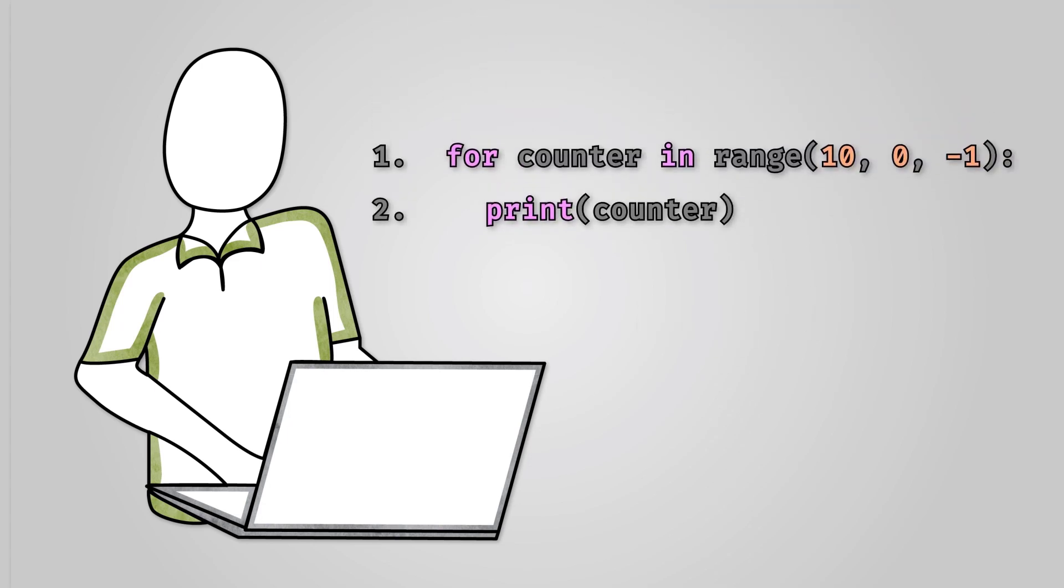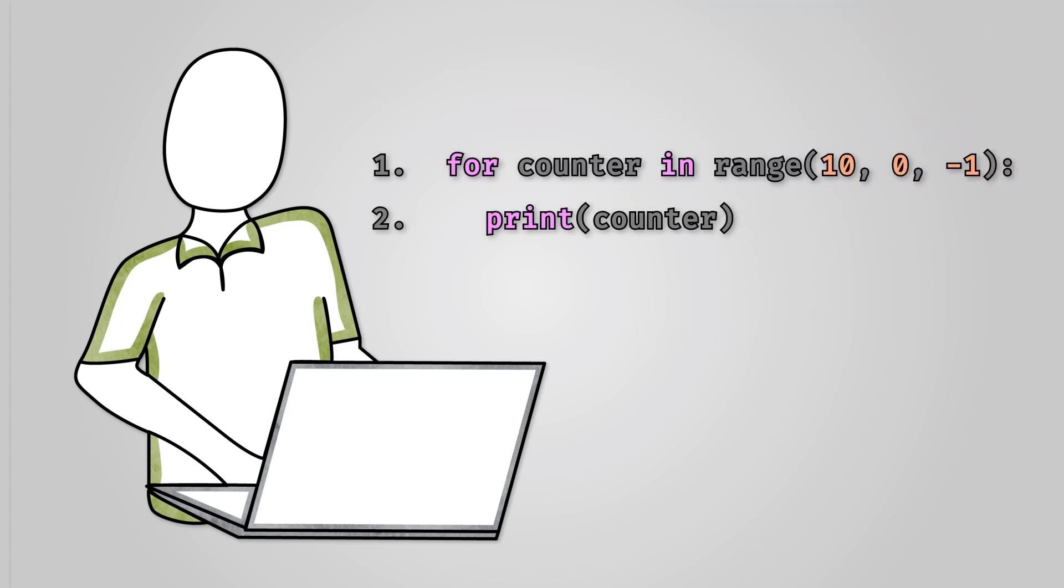Here is some code to print out all the numbers from 10 down to 1. The important line is 4 counter in range 10, 0, minus 1. As this is saying we start at 10, end at 1 because when we get to 0 the loop won't run, and go down by minus 1 each time.